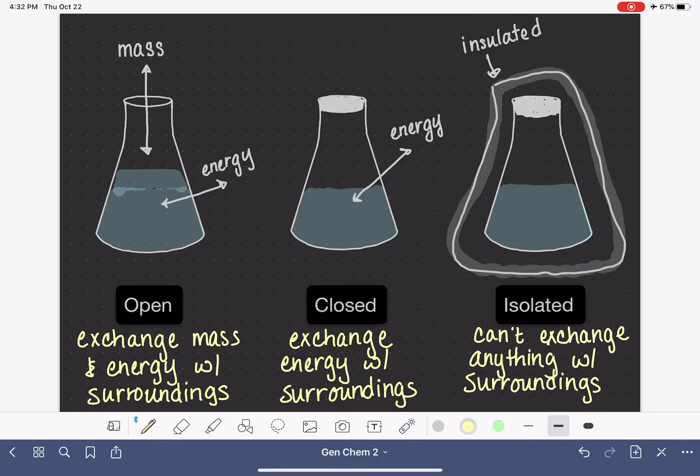And these are the three different types of systems that we work with in chemistry. The open system, which can exchange both energy and mass. The closed system, which only exchanges energy. And the isolated system, which does not exchange anything at all.